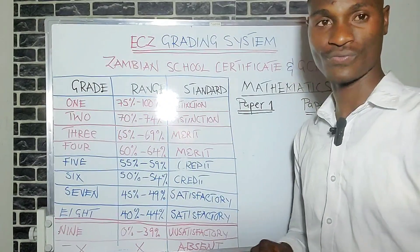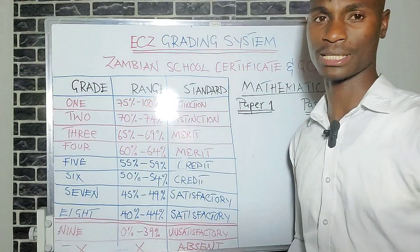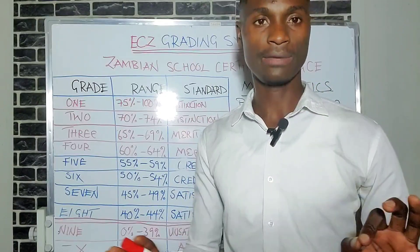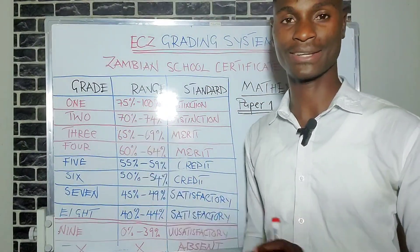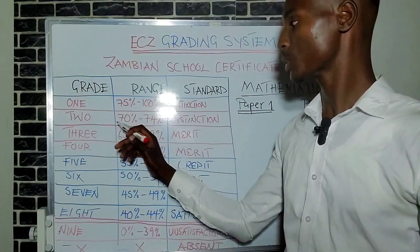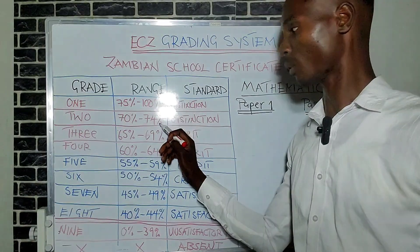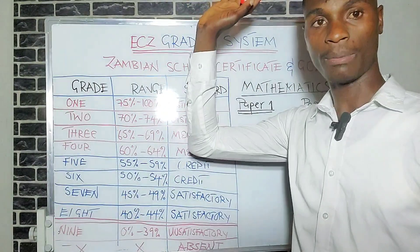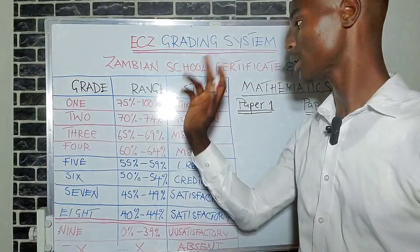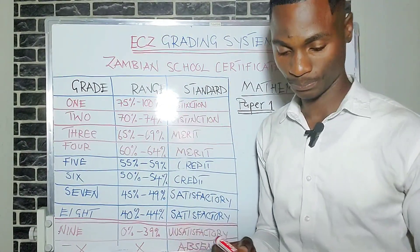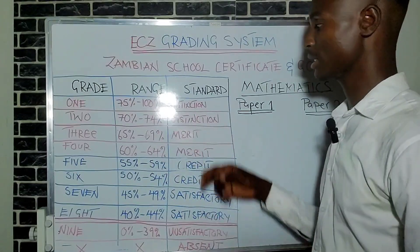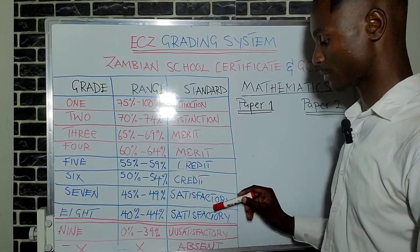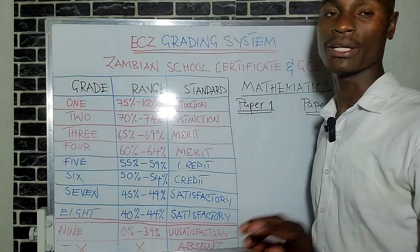This is where I'm very interested, because I believe in excellence, not mediocrity. Grade 2 is when you score between 70 and 74 — that's a 'distinction.' Grade 1 is when you score from 75 up to 100 percent — also a 'distinction.' So from 40 to 100 percent you have two satisfactories, two credits, two merits, and two distinctions.